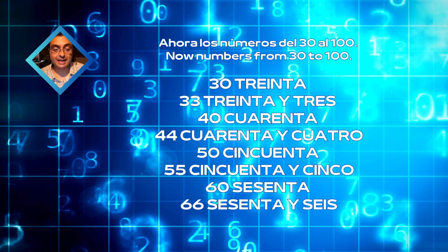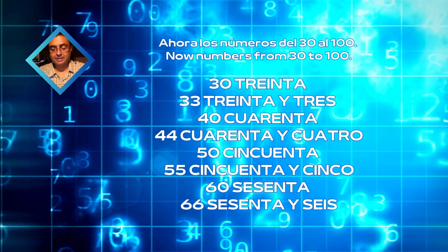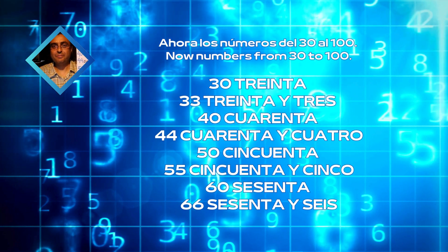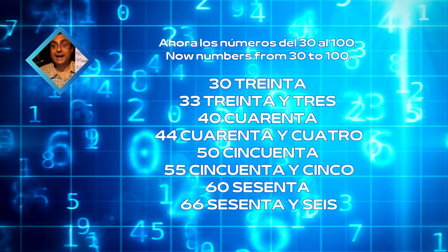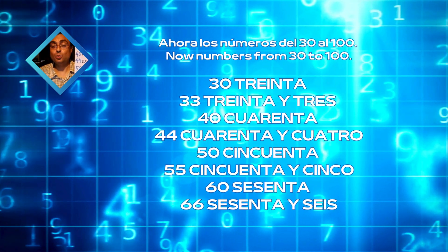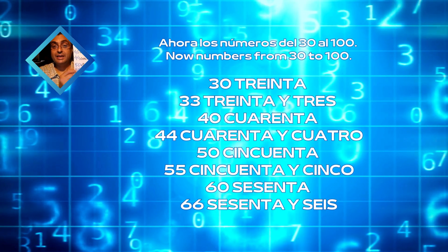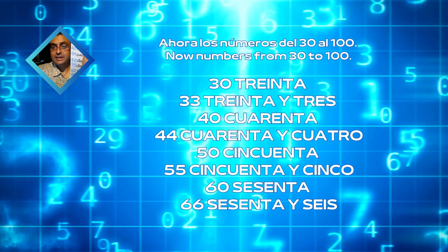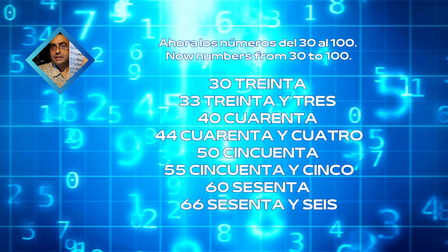Y ahora los números del 30 hasta el 100. 30, 33, 40, 44, 50, 55, 60, 66. As you see, como podéis ver, aquí no es una palabra. Están los componentes separados. So, as you can see, here we don't have a word, but three words. 30 y 3.